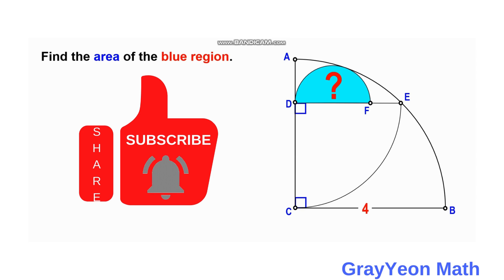A semicircle is drawn which is mutually tangent with the largest quarter circle. The radius of the largest quarter circle is given to be four units, and we are required to find the area of this blue region, or the semicircle.